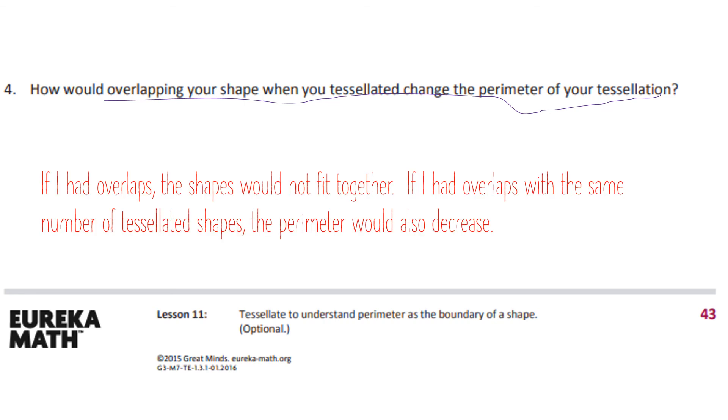All right, I'm going to go over the answer now. If you need more time just press pause. So you can see I wrote: if I had overlaps the shapes would not fit together, and if I had overlapped with the same number of tessellated shapes the perimeter would also decrease, because if they're kind of squished now and overlapping, not only are they not fitting right like a puzzle but your shape is smaller than it normally would be.